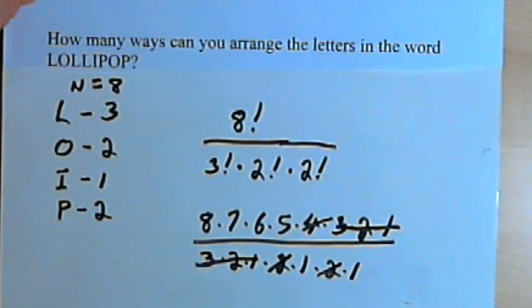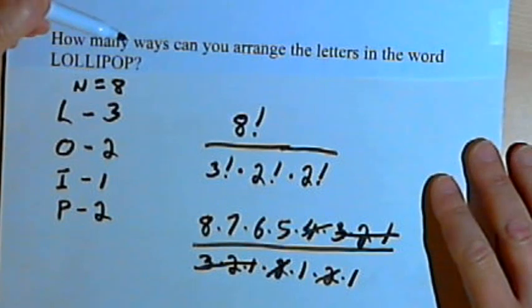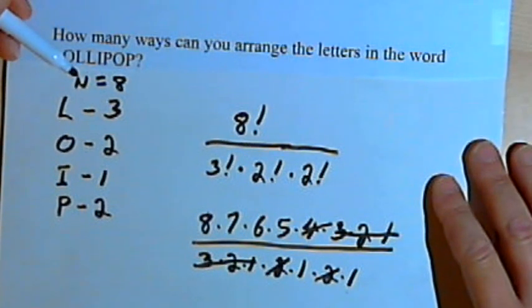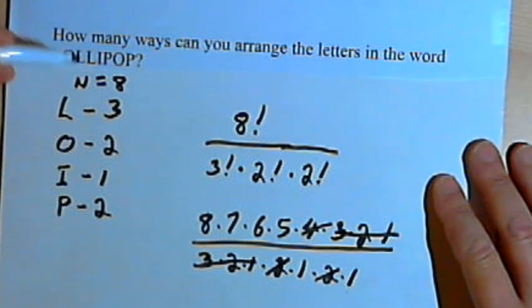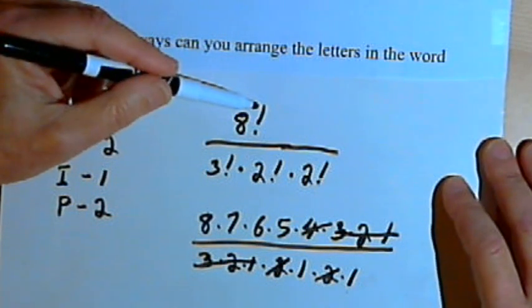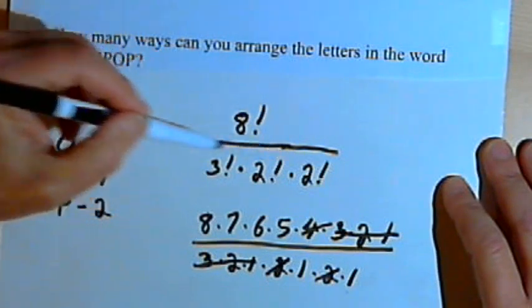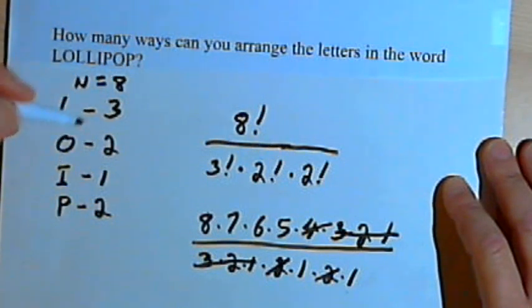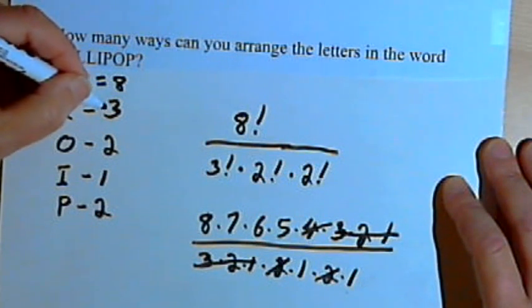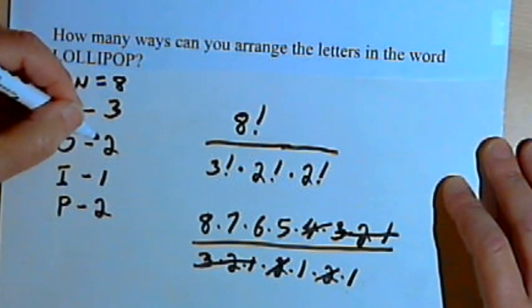Okay, so once again, when you're dealing with repeated objects and you want to know how many permutations you have, you take the total number of objects, the factorial of that number, and make that the numerator of your fraction. For the denominator, you multiply the factorials of the length of each of the repeats.